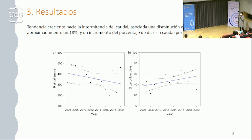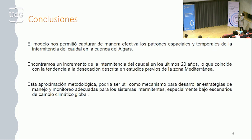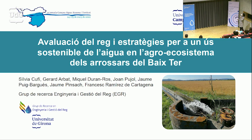Otro resultado muy interesante fue que logramos identificar una tendencia creciente hacia la intermitencia del caudal. Como pueden ver en las gráficas que representan la precipitación anual y el porcentaje de días sin caudal anual, tienen una relación inversa: aproximadamente una disminución del 18% de la precipitación en los últimos 14 años ha representado un aumento de casi el doble de días sin caudal en la red fluvial, lo que ya da un indicador de lo que podría pasar en futuros escenarios de cambio climático. Para concluir, este modelo nos permitió capturar de manera adecuada estos patrones espaciales y temporales de la intermitencia del caudal, y este incremento encontrado va muy afín con estudios previos que destacan la desecación creciente en la zona mediterránea. Esta aproximación metodológica podría ser un mecanismo muy útil para desarrollar estrategias de manejo y gestión adecuadas para los ríos intermitentes, sobre todo bajo futuros escenarios de cambio climático. Muchas gracias.